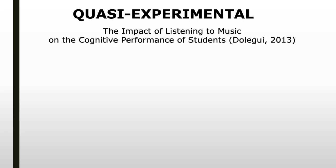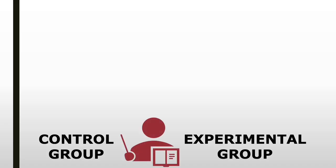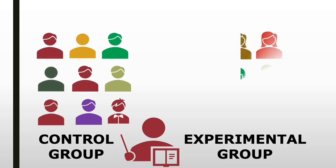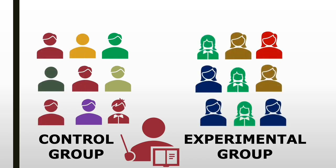What about a quasi-experimental research? Let us use the previous example: testing the impact of listening to music on the cognitive performance of the students. In this scenario, the researcher must establish a control group and an experimental group. But remember, quasi-experimental research designs sometimes lack a control group. In this research approach, the participants are assigned in a non-random criteria. In the example, all males are purposefully assigned to a control group and females to the experimental group.